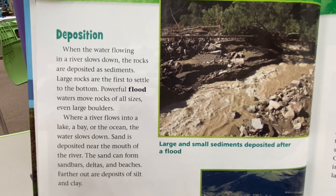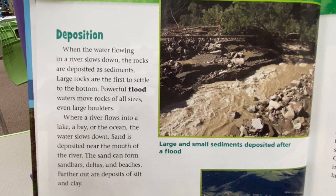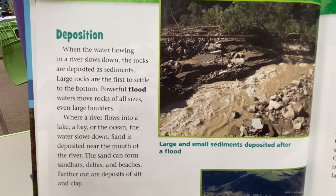Deposition. When the water flowing in a river slows down, the rocks are deposited as sediments. Large rocks are the first to settle to the bottom. Powerful floodwaters move rocks of all sizes, even large boulders. Where a river flows into a lake, a bay, or the ocean, the water slows down. Sand is deposited near the mouth of the river, and can form sandbars, deltas, and beaches. Farther out are deposits of silt and clay.